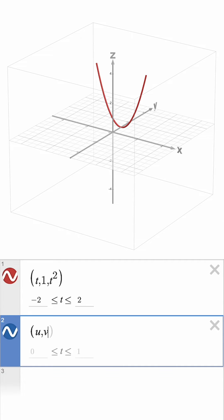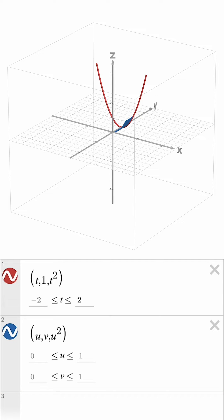If we type u v u squared, we will see a surface following a parabolic path.